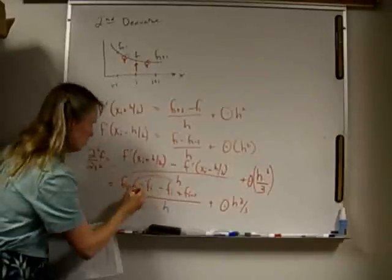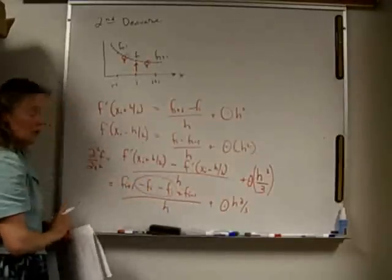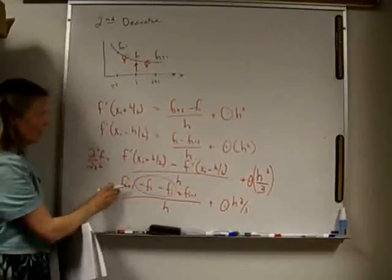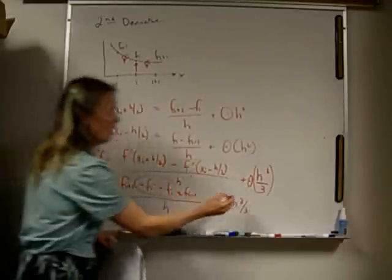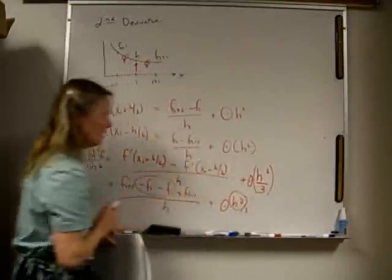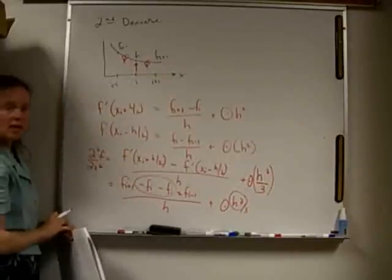So I can combine these terms right here to be 2 f i in the middle. So I have the two endpoints minus twice my middle point divided by h and my error for the second derivative is on the order of h cubed.